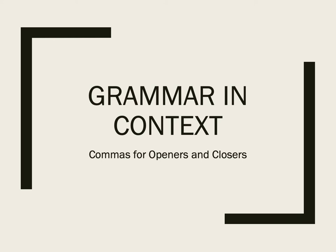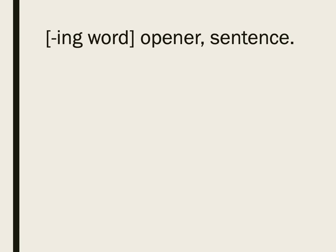Grammar and context: commas for openers and closers. We have already discussed one kind of opener using an awoobus word, but there are also other ways to open a sentence. One is to start with an ing verb. When you start with an ing verb, you must have a comma after that clause and before the complete sentence. Let's look at this sentence.